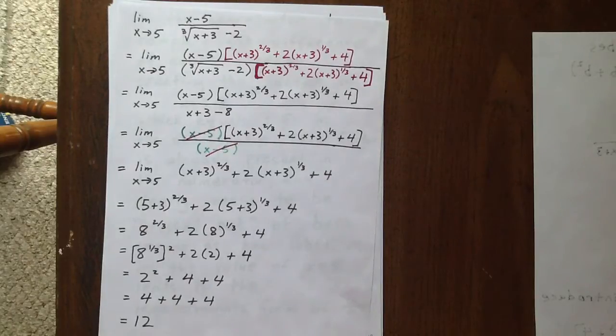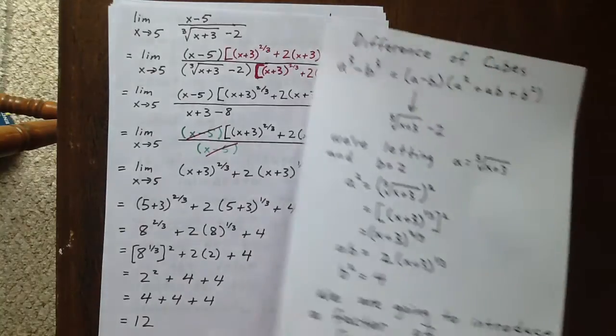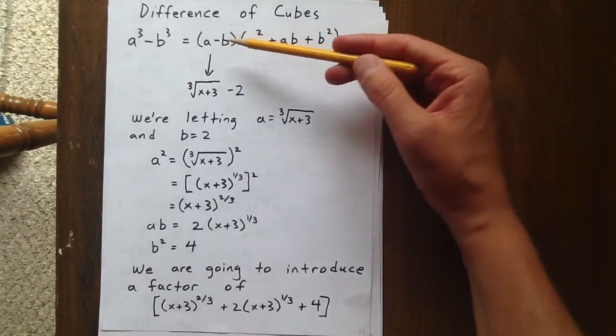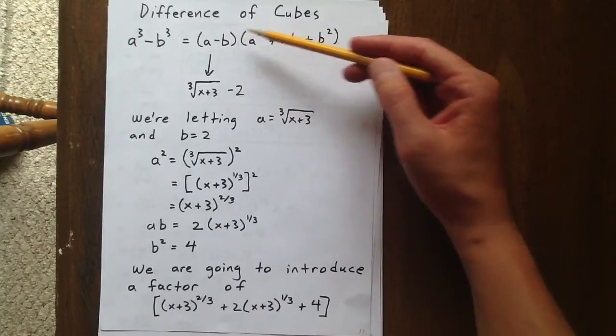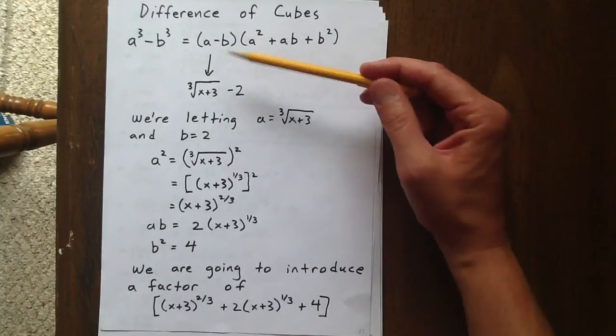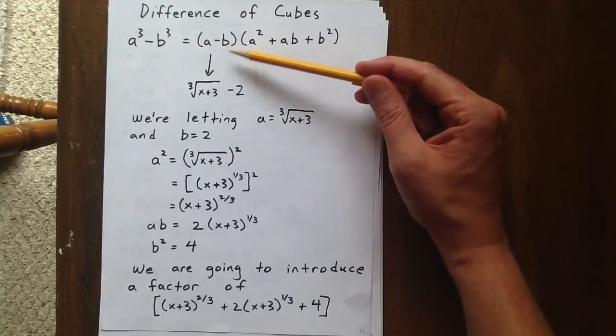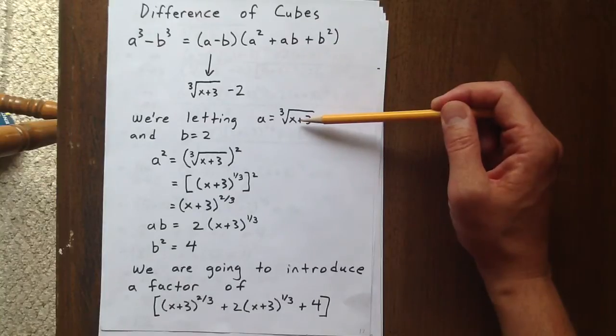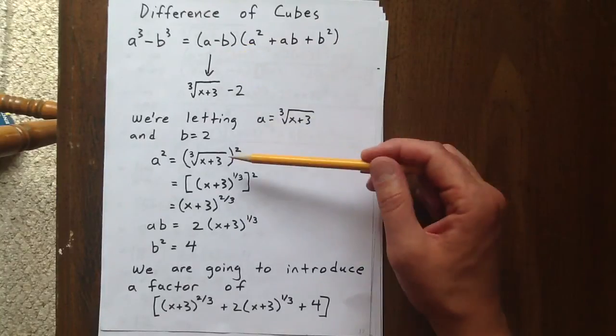When taking a cubed root we want to think of this as a difference of cubes situation. Well recall the philosophy for difference of cubes. a cubed minus b cubed equals a minus b times a squared plus ab plus b squared. We want to think of that first factor as a minus b. That's like saying let a be the cubed root of x plus 3 and let b be 2.